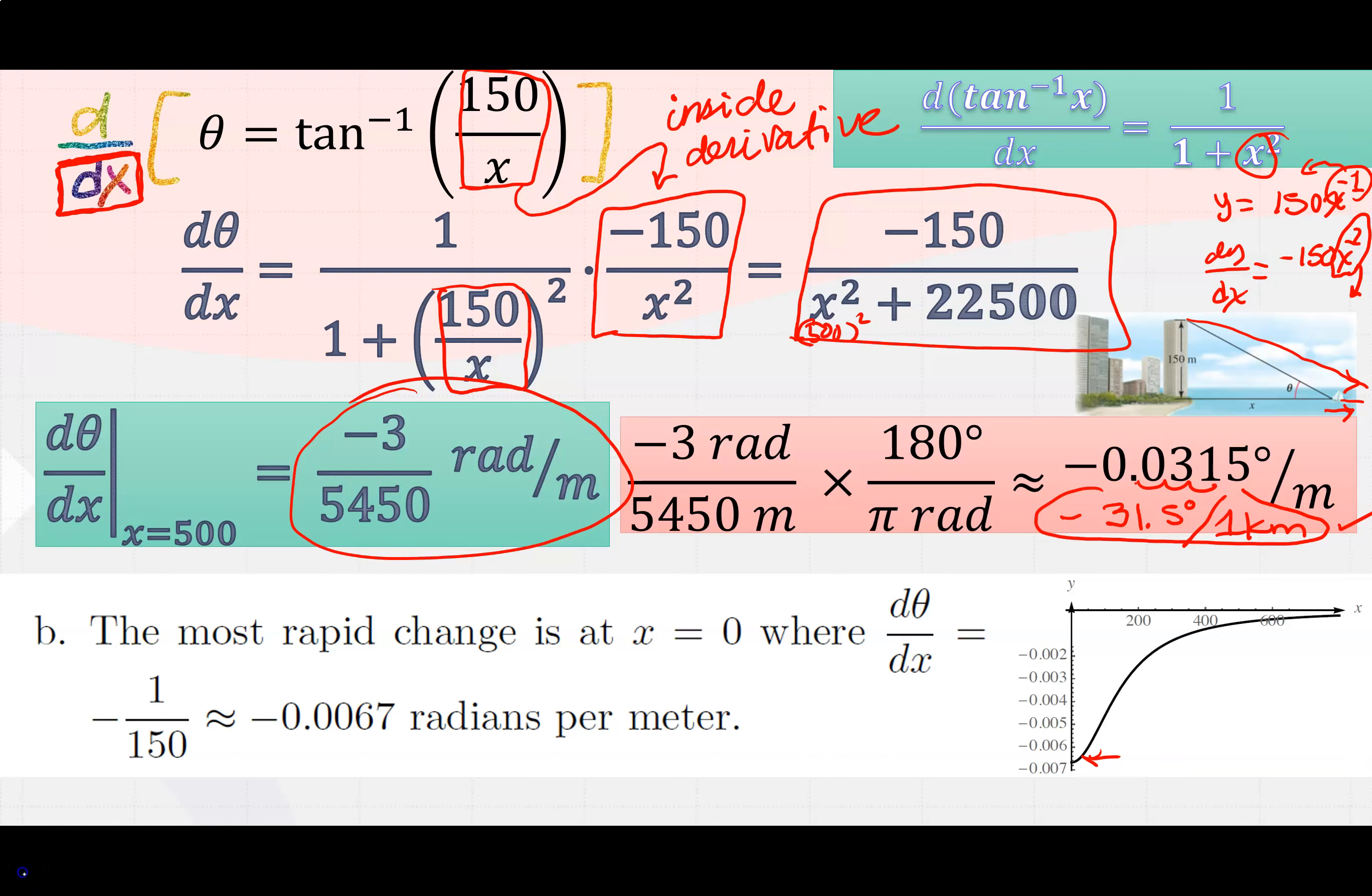So part b we're going to use a graphing calculator. However, we could do part a and I think part a is more interesting. So here we go. When looking at this right triangle here, we see that this angle right here is involving opposite over adjacent, and opposite over adjacent is going to call for tangent. So tangent of theta is 150 over x. And in order to solve for theta, we would have to use inverse tangent. So theta is inverse tangent of 150 over x - that's basically just the definition of an inverse function, right?